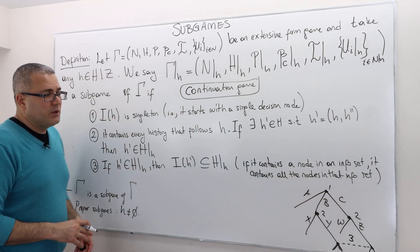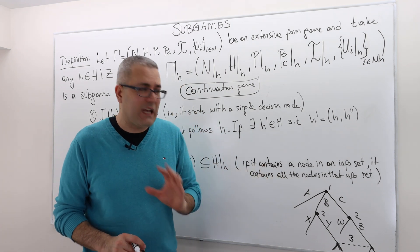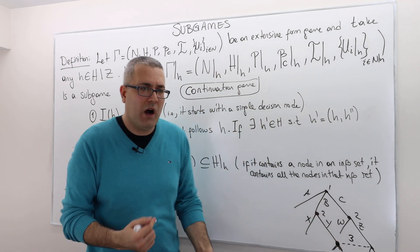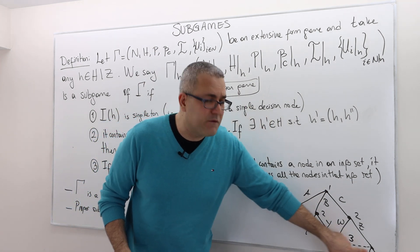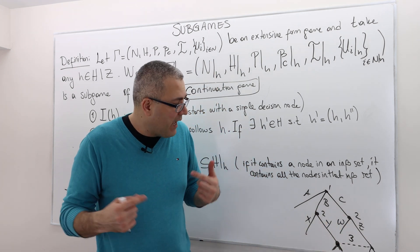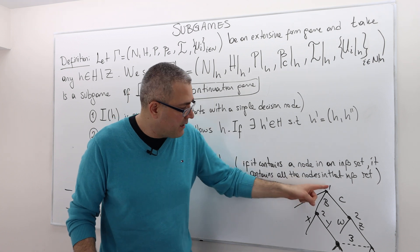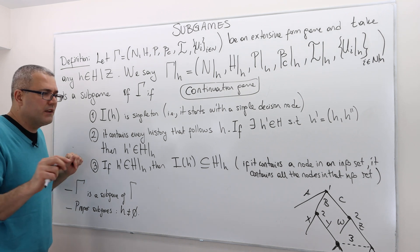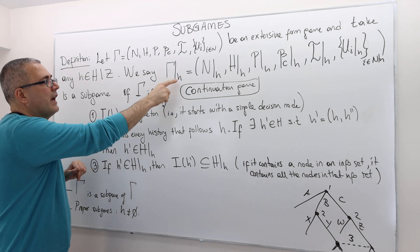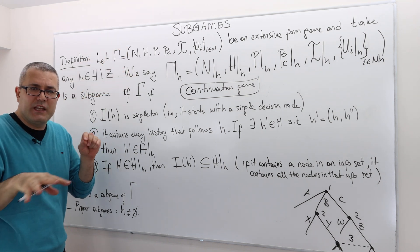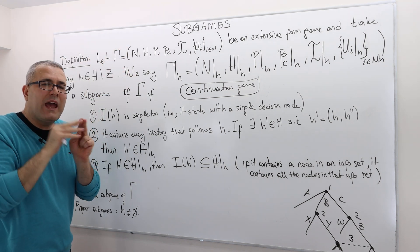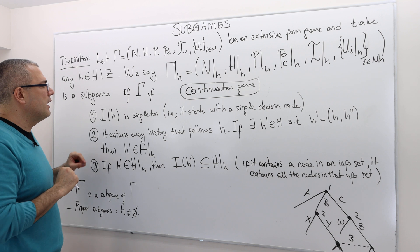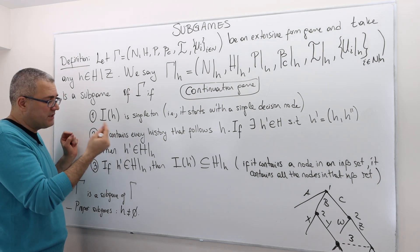So, for example, in this game, a subgame cannot start from this history B-Y. Why is that? Because B-Y ends up in an information set which is not singleton. It may, however, start C, or it may start with B, maybe, according to this constraint. But there are two more. But the important thing is the H that we are constructing a continuation game, subgame, the H is going to end up to an information set, but this information set must have one and only one element in it, so singleton.